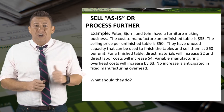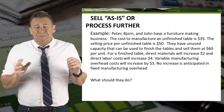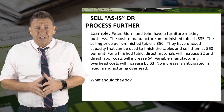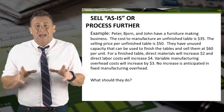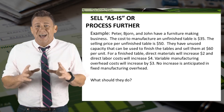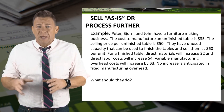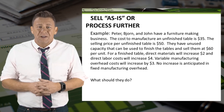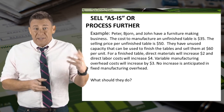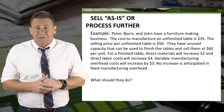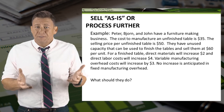Peter, Bjorn, and John have a furniture making business. The cost to manufacture an unfinished table is $35. The selling price for the unfinished table is $50.